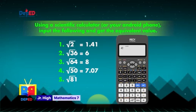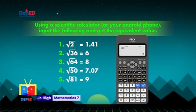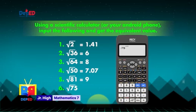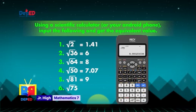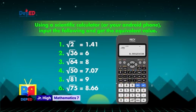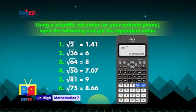The square root of 81 is 9. And the square root of 75 is 5 square root of 3 — if we round it off to the nearest hundredths, that would be 8.66.